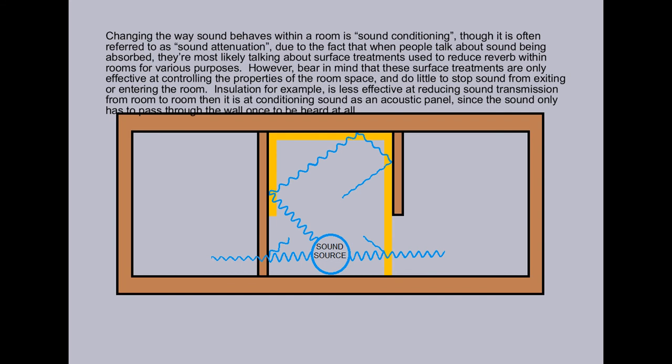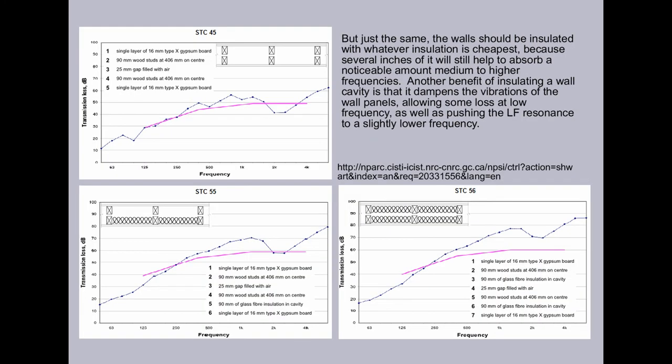Insulation, for example, is less effective at reducing sound transmission from room to room than it is at conditioning sound as an acoustic panel, since the sound only has to pass through the wall once to be heard at all. But just the same, the wall should be insulated with whatever insulation is cheapest, because several inches of it will still help to absorb a noticeable amount of medium to higher frequencies.